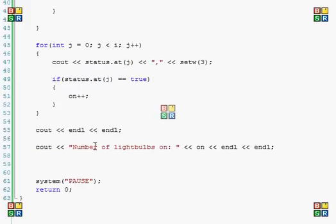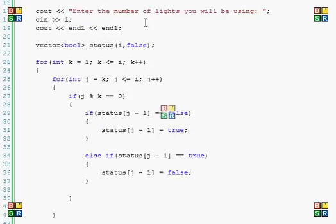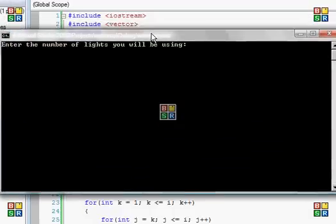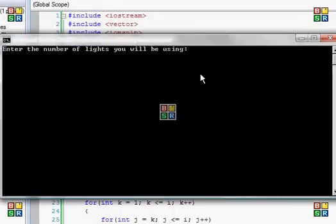And that's pretty much it. And then it tells how many are on, or whatever. So I'll run it real quick so you can see. Okay, enter the number of lights you'll be using. Just an example, do 3 first.